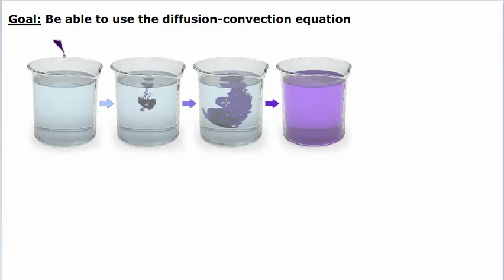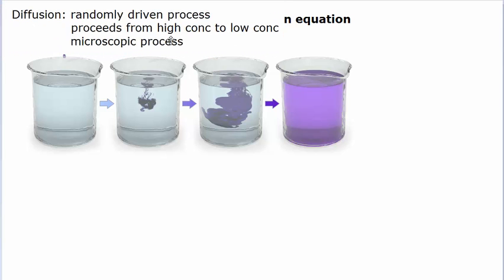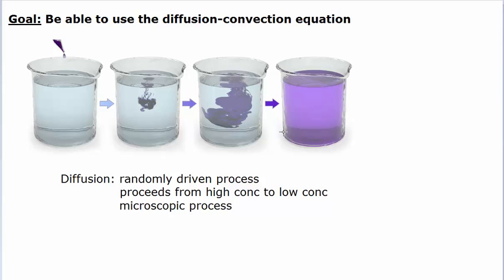When this dispersion happens, it pretty much happens symmetrically — it looks spherical, so you expect the dye particles are moving out in spherical shells throughout the solution. Diffusion is a randomly driven process, and it proceeds from high concentration to low concentration. This takes you into looking at what a three-dimensional random walk looks like, where the dye is spreading out in many directions.